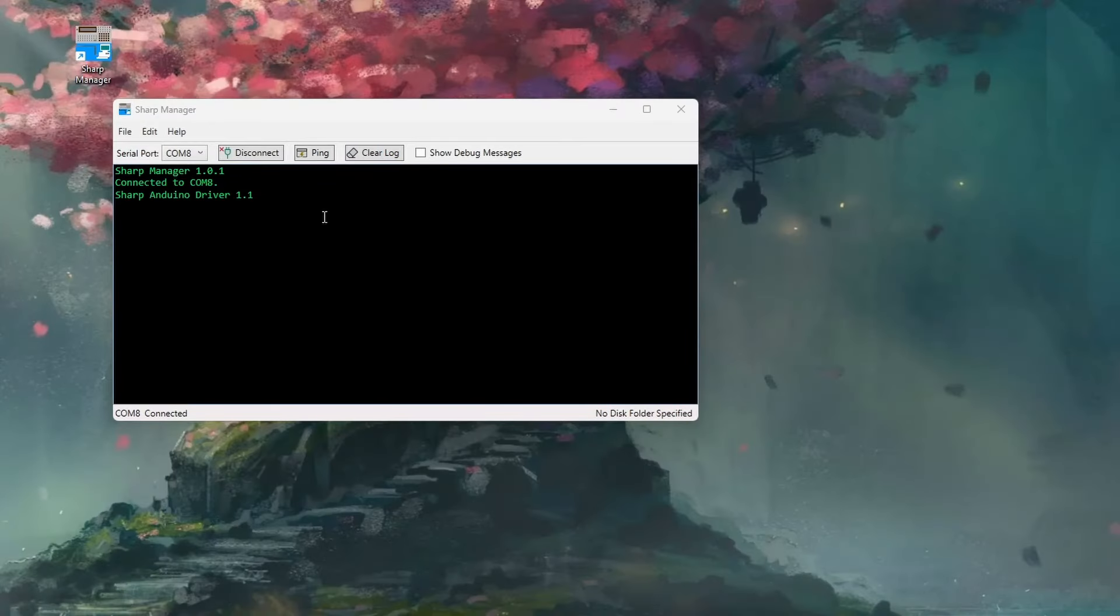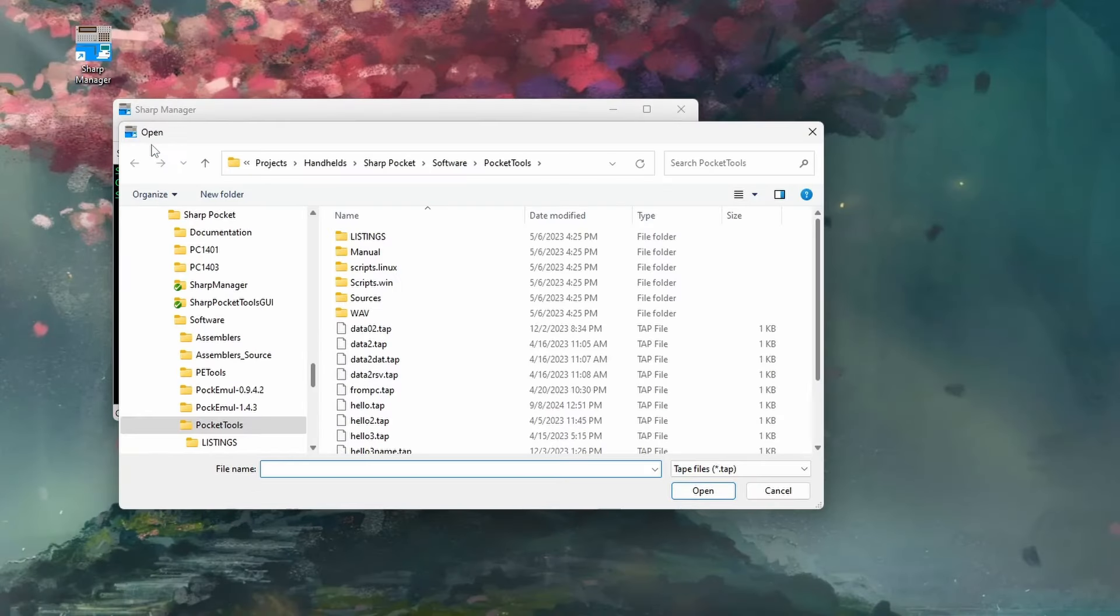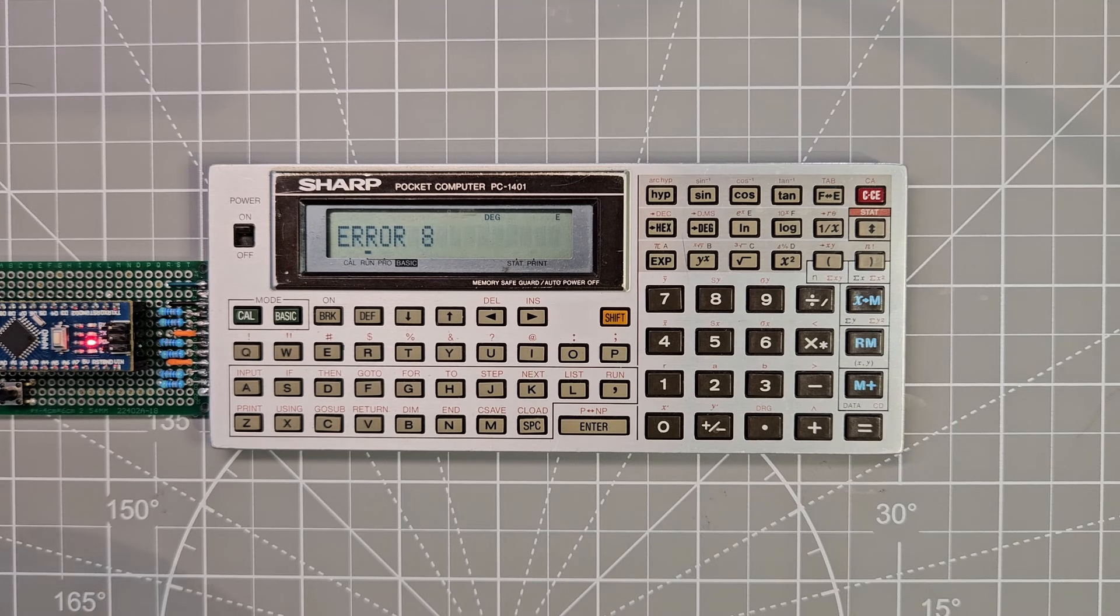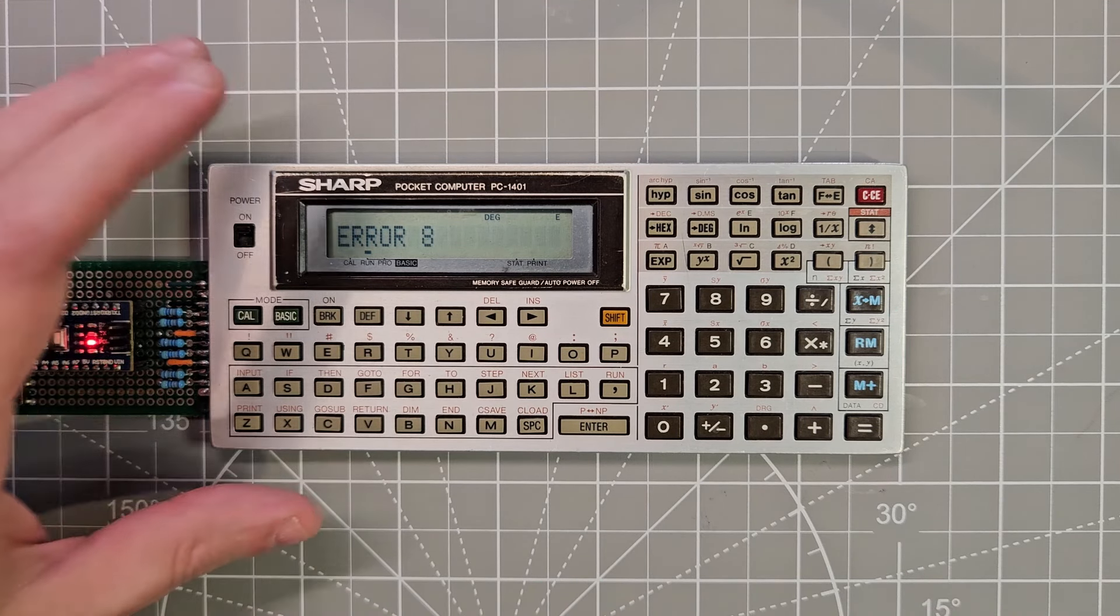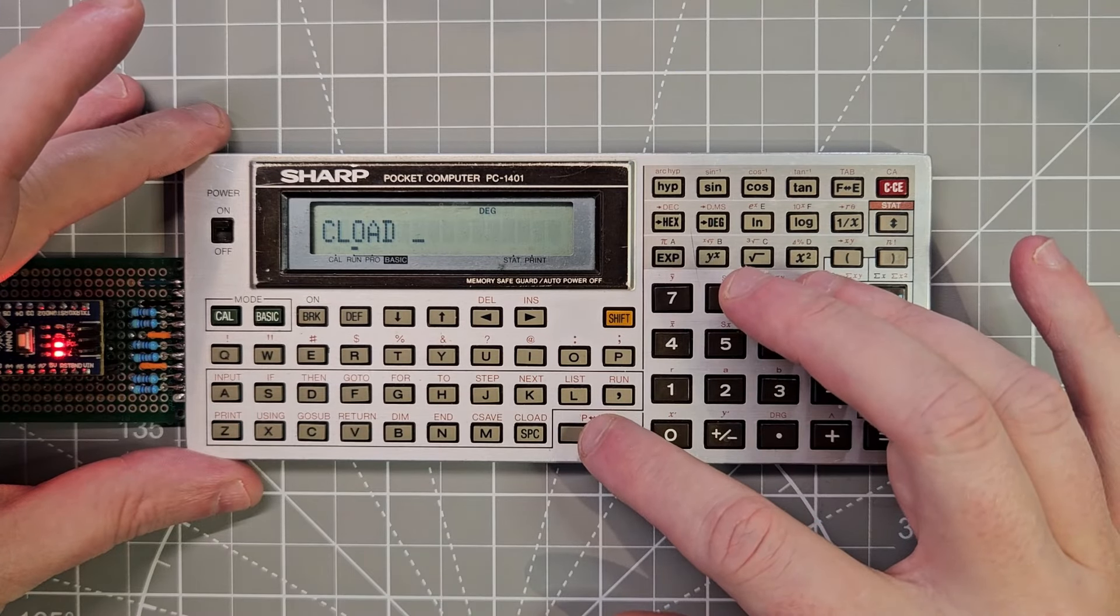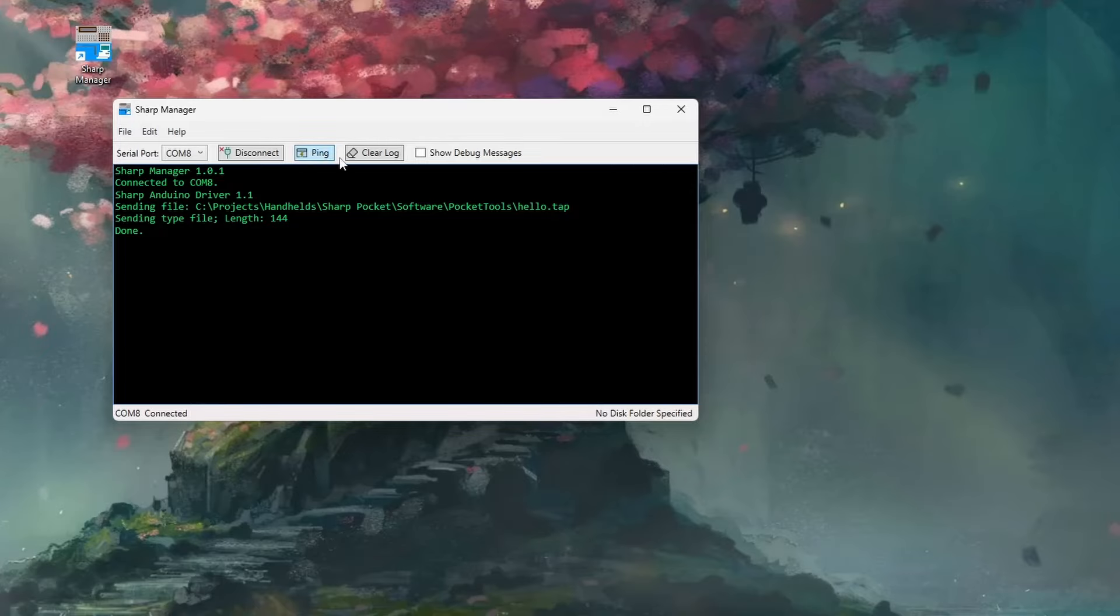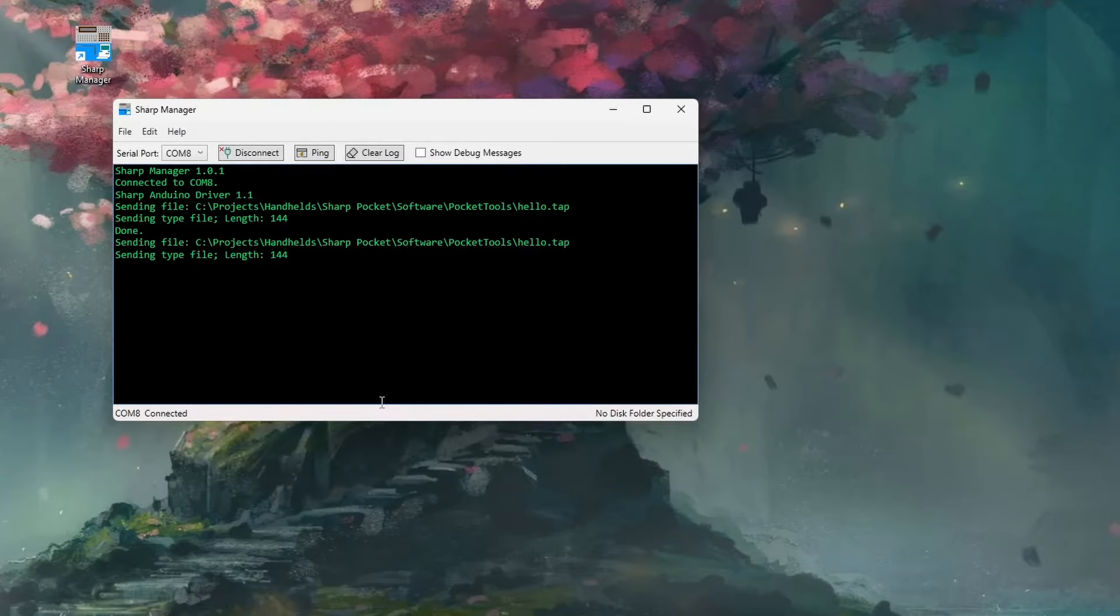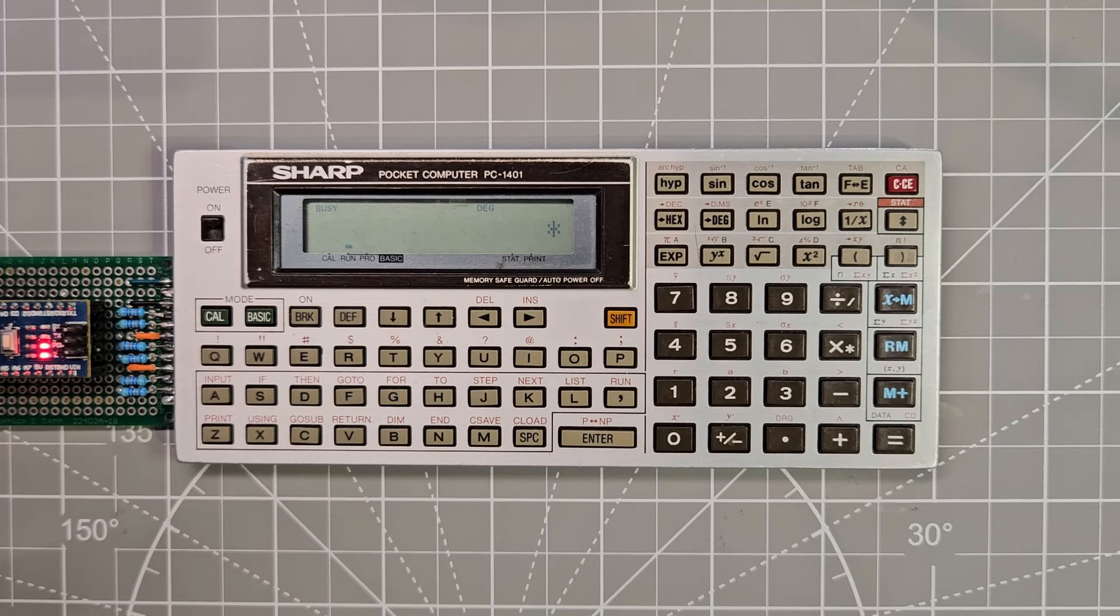So we'll do CLoad from there. And then over in Sharp Manager, we will say we want to send a tape file over and we'll pick a tape file to send.